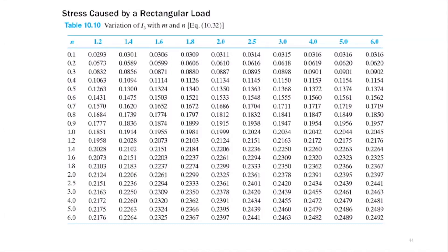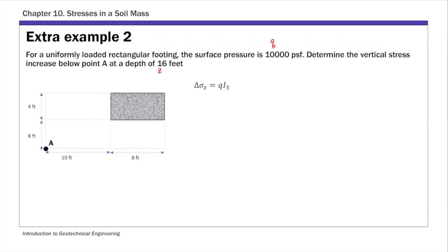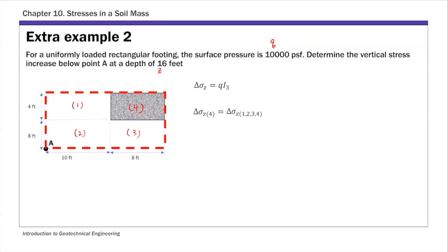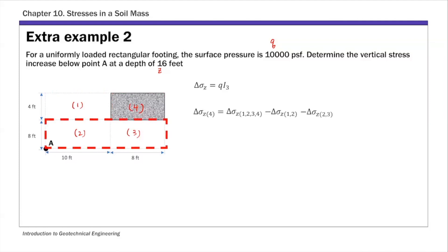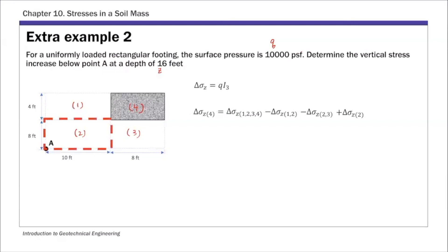So we're going to construct several rectangles and use the principle of superposition. Let me label these rectangles: 1, 2, 3, and the rectangular footing 4. The stress increase due to rectangular footing 4 is calculated as follows: first we calculate the stress increase due to a large rectangle covering area 1, 2, 3, 4. Then we subtract rectangle area 1, 2 and subtract rectangular area 2, 3. Since we subtracted rectangle 2 twice, we need to add it back to get the stress increase due to the original rectangular area 4. Since q is uniform, we just need to find the influence factor I3 corresponding to each of these rectangles.